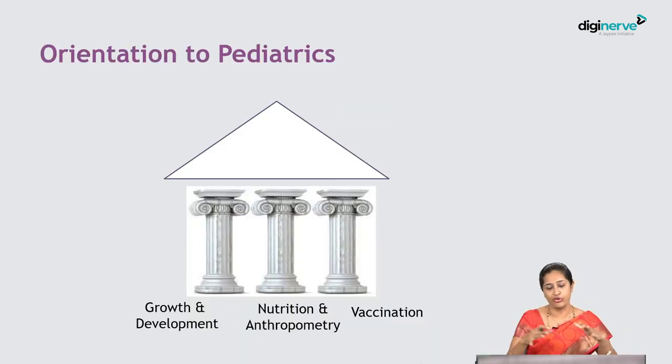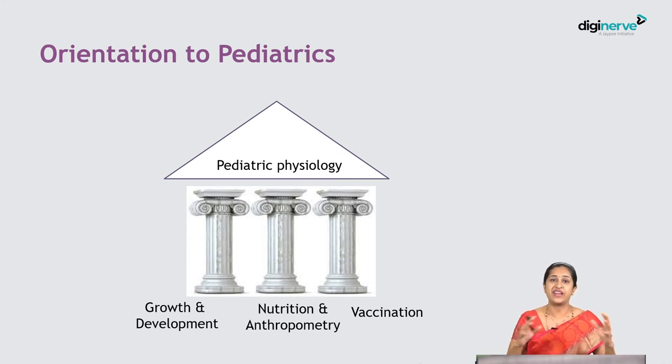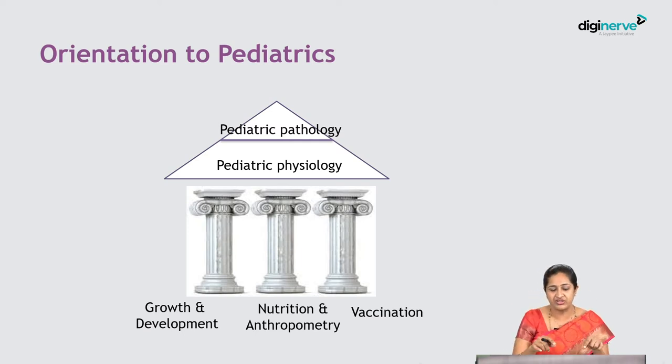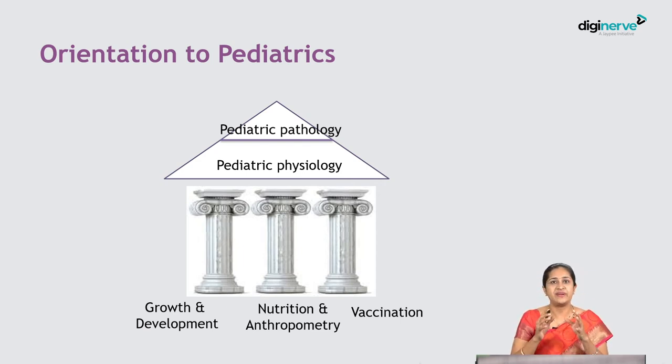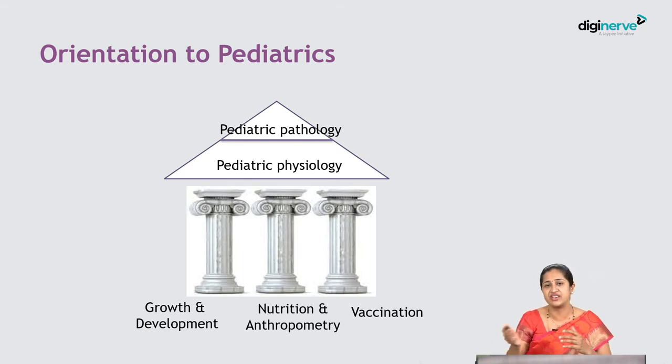The rest of pediatrics I would put as a roof over this house of three pillars. That roof has a broad base of pediatric physiology — the normal physiology of a child, including transition from neonatal to adult circulation, development from embryology through infancy to puberty. On top of that broad base, we have only a very small peak, which is pediatric pathology. These are the reasons why pediatrics is not as difficult a subject as it is made out to be.